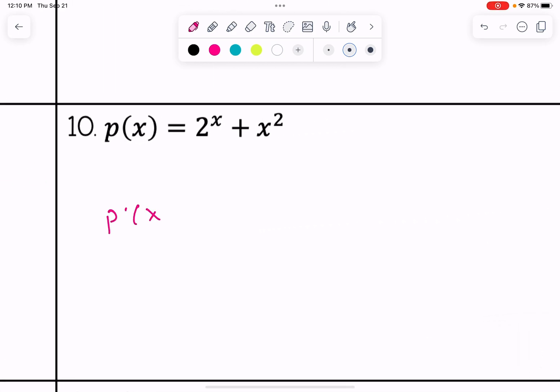Number 10, derivative of 2 to the x plus x squared is 2 to the x ln of 2 plus 2x.